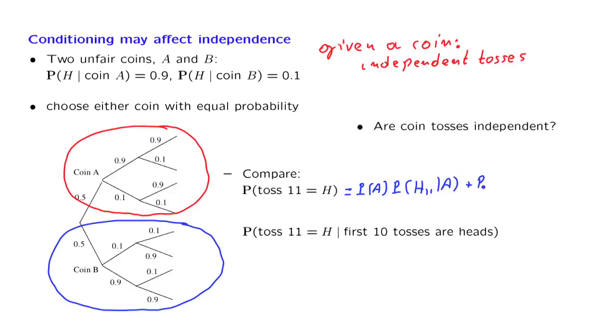There's also a certain probability that it's coin B, and then a conditional probability that we obtain heads, given that it was coin B. We use the numbers that are given in this example. We have 0.5 probability of obtaining a particular coin, 0.9 probability of heads for coin A, 0.5 probability that it's coin B, and 0.1 probability of heads if it is indeed coin B. We do the arithmetic, and we find that the answer is 0.5.